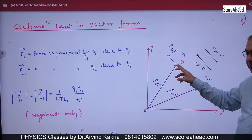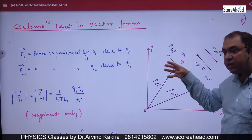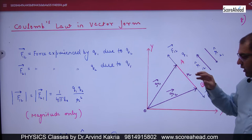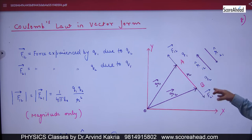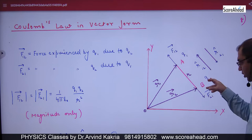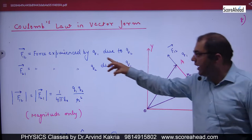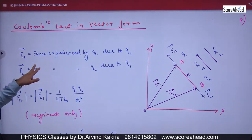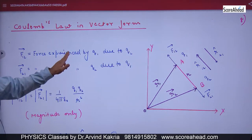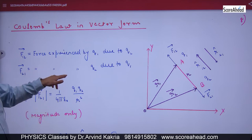Q2 repels Q1. The force F12 vector means the force exerted by 2 on 1. F21 vector means the force exerted by 1 on 2. So F12 vector is the force experienced by Q1 due to Q2, and F21 vector is the force experienced by Q2 due to Q1.